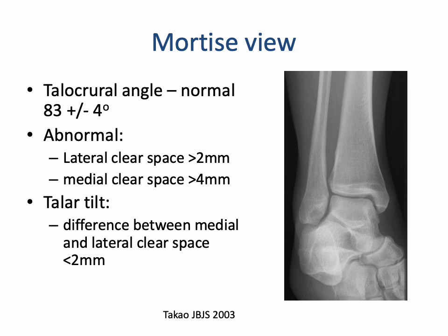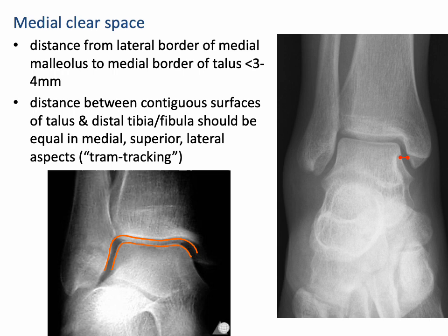On mortise view we can look at the talocrural angle, which is the angle between a line drawn on the articular surface of the distal tibia and a line connecting the tips of the malleolus, which should usually be around 83 degrees. We can also assess the medial and lateral clear spaces and the talar tilt, which is the difference between the medial and lateral clear spaces. The distances around the tibiotalar and tibio-fibular joints should be equal.